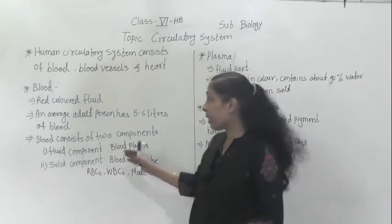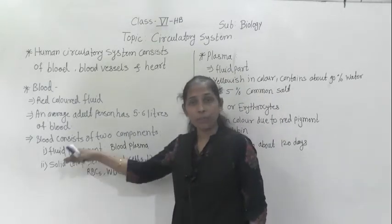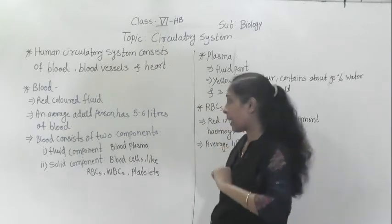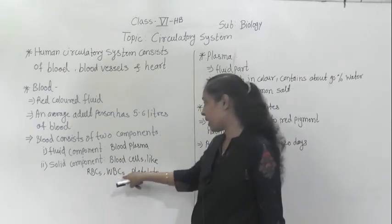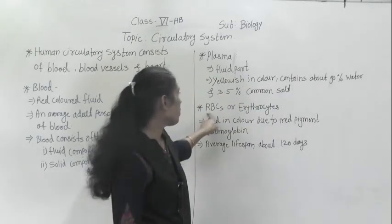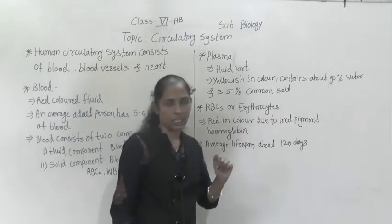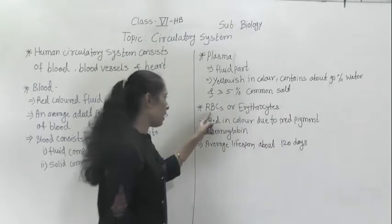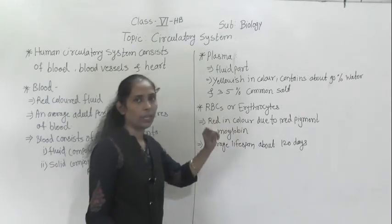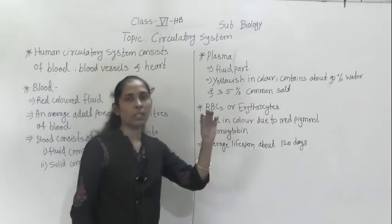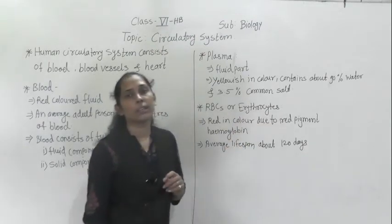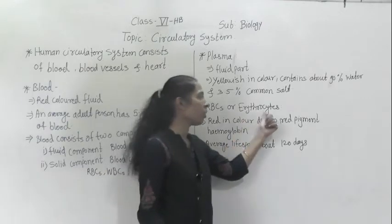The blood also contains solid components, which are blood cells. There are three types of blood cells: RBCs, WBCs and platelets. Let's look at RBCs first. RBCs stands for Red Blood Cells — R for red, B for blood, C for cells. They are also called erythrocytes.